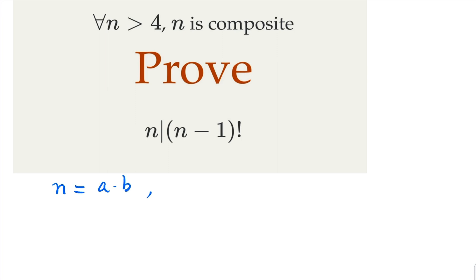In this case, since n is composite, a and b are both smaller than n, greater or equal to 2.